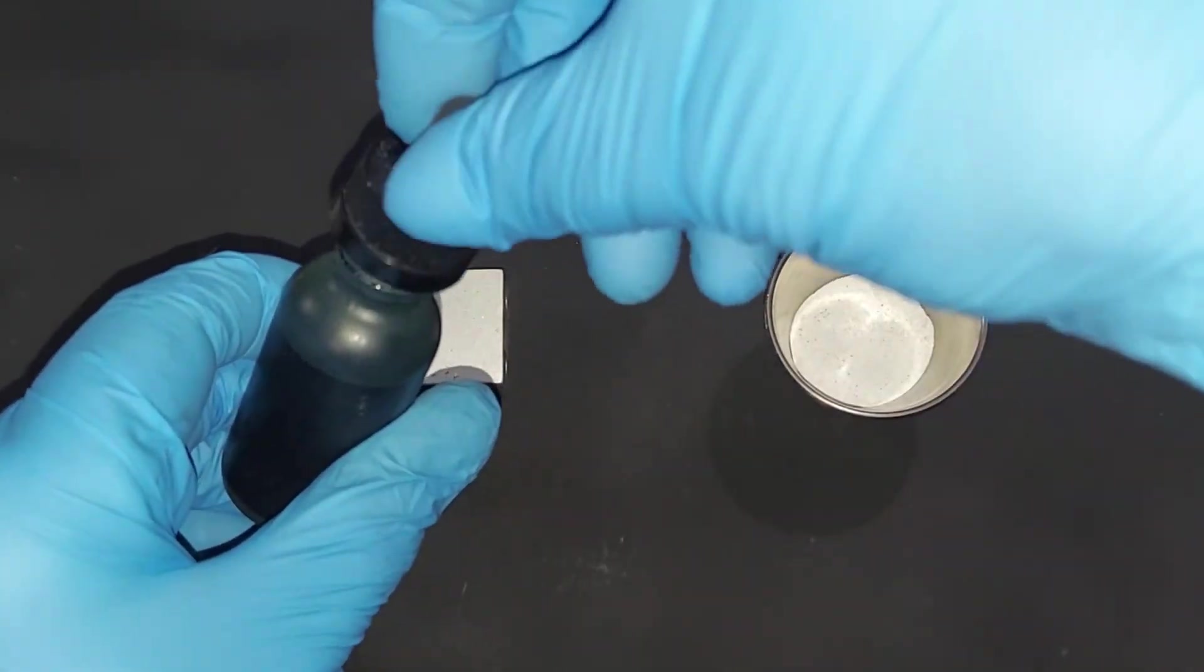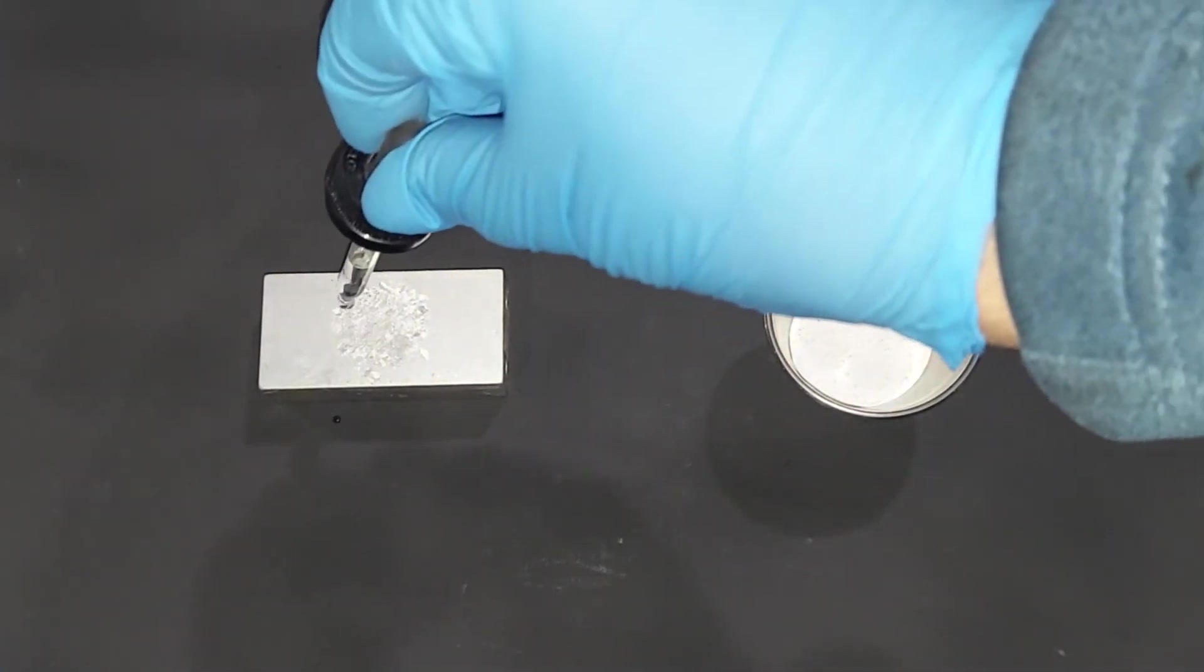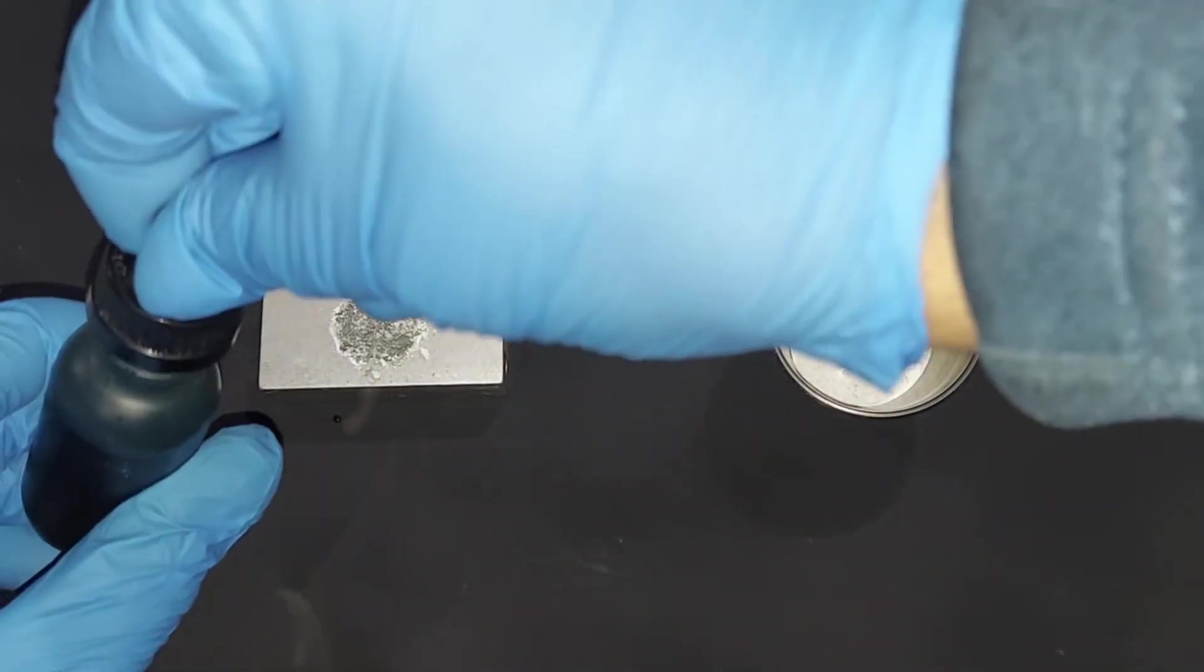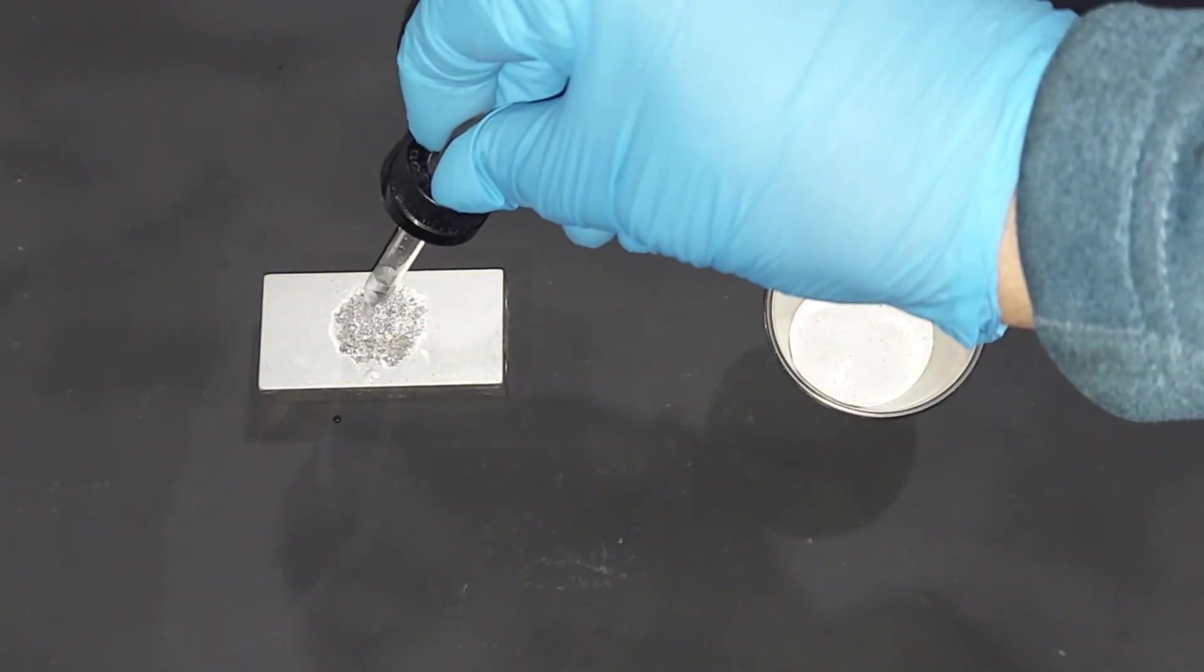Next, I'm going to drip some distilled water on this, which we are now converting any calcium oxide to calcium hydroxide, and you can already see the steam coming off of it.